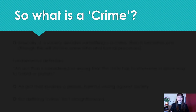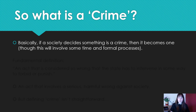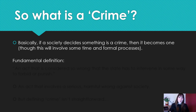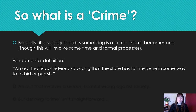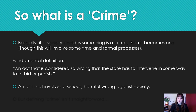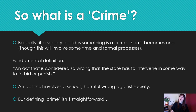What is a crime? Basically, if a society decides something is a crime, then it becomes one. This process, as we know from Unit 1, is very long. But as society deems something so deviant that it's a crime, it then usually eventually becomes a crime legally. The fundamental definition is an act that is considered so wrong that the state has to intervene in some way to forbid or punish it — an act that involves a serious, harmful wrong against society. But defining crime isn't quite this straightforward, and this is something that the examiners want you to know about: the difficulties of the definition of crime.